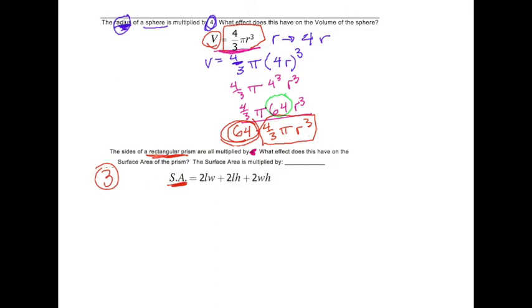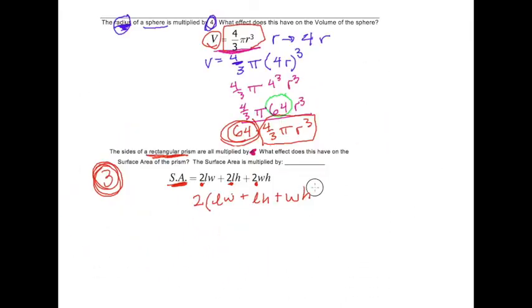Now, I'm going to multiply all these sides by 3, the length, the width, and the height. So let's see what happens. But before I do that, I want to see if I can simplify this equation as it is. So look, they both have 2 in common. Algebra time. Let's go ahead and pull out a 2 from everything. 2, parenthesis. Now I have LW plus LH plus WH.